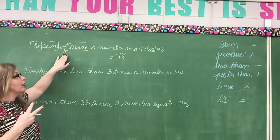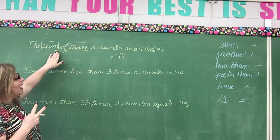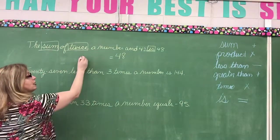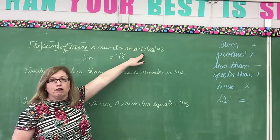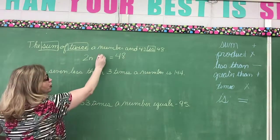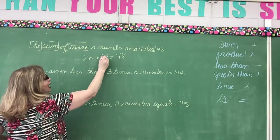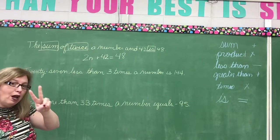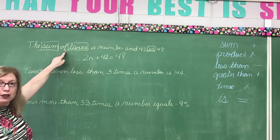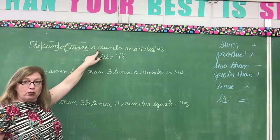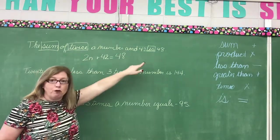What two things am I going to add? I'm going to add twice a number. Well twice a number is 2n and 42. There's my two things that I'm going to add. I knew I was looking for two numbers because it said the sum of. Okay what are the two things I'm adding? Well I'm going to add twice a number and 42.